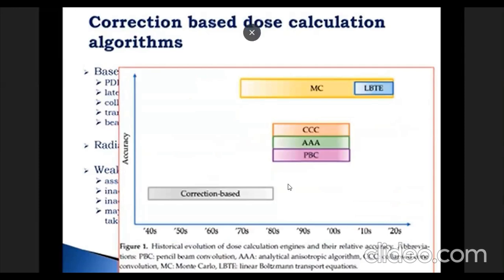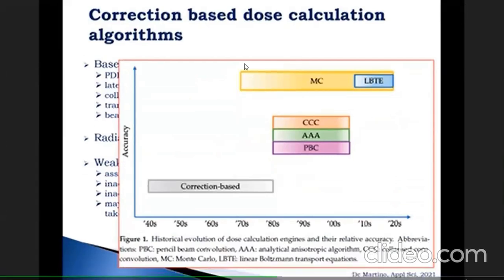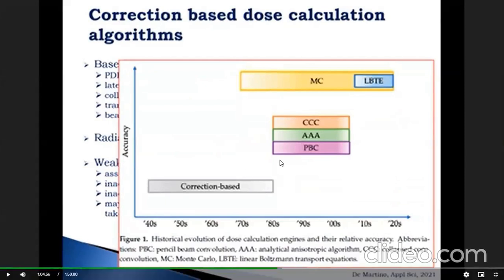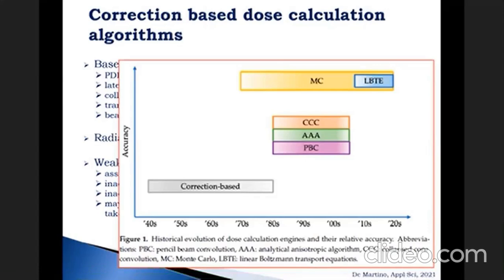Until the 1970s, because no CT data were available, all algorithms were correction-based. As imaging and computer technology evolved, new algorithms were developed, starting with pencil beam convolution, through collapsed cone convolution, and later Monte Carlo or linear Boltzmann transport equations. Along with their development, their accuracy in predicting dose has increased.